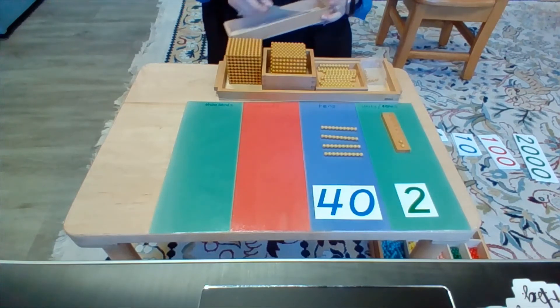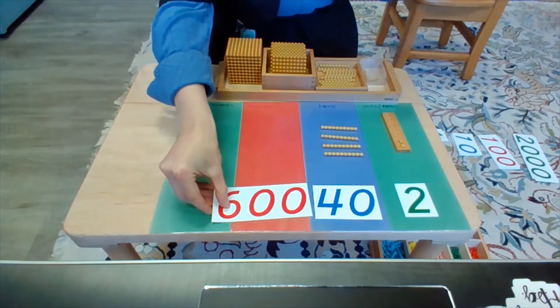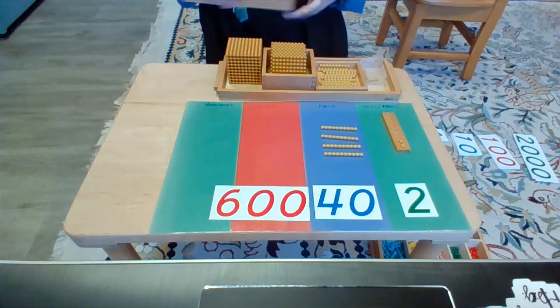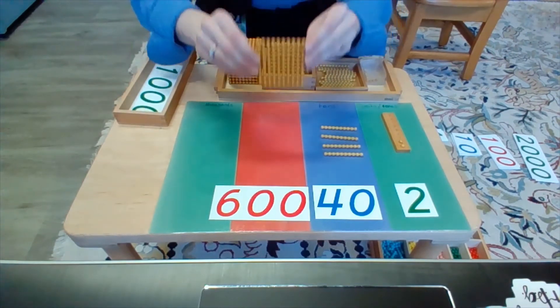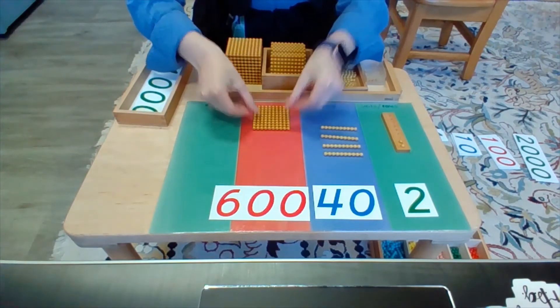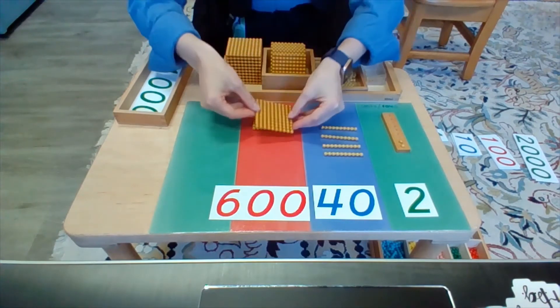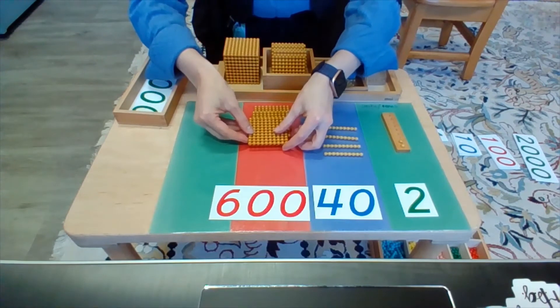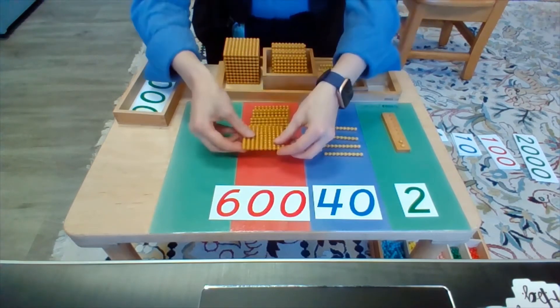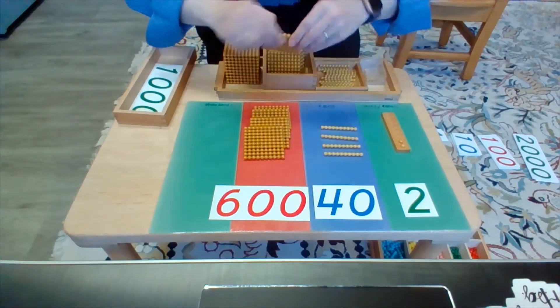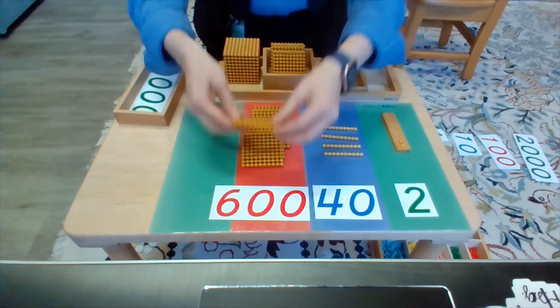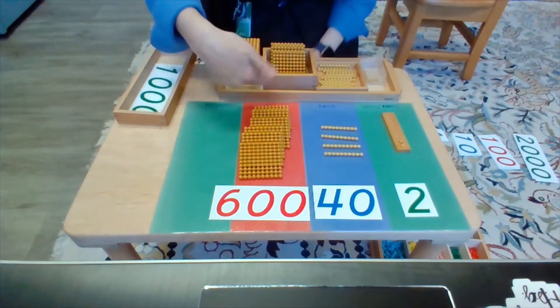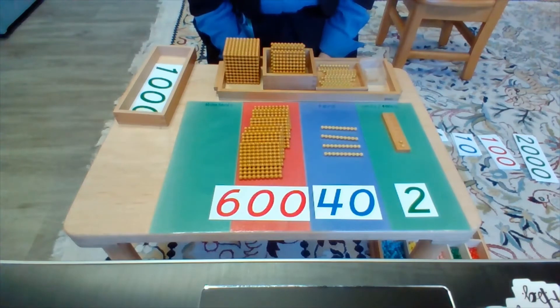When I come to the hundreds place, this is where I am representing 600 and that is because I am counting in hundreds. So I have 1, 2, 3, 4, 5, 6 and here I have 6 hundreds.